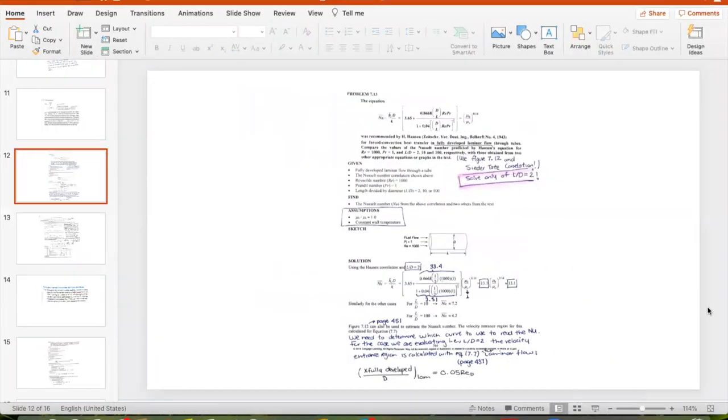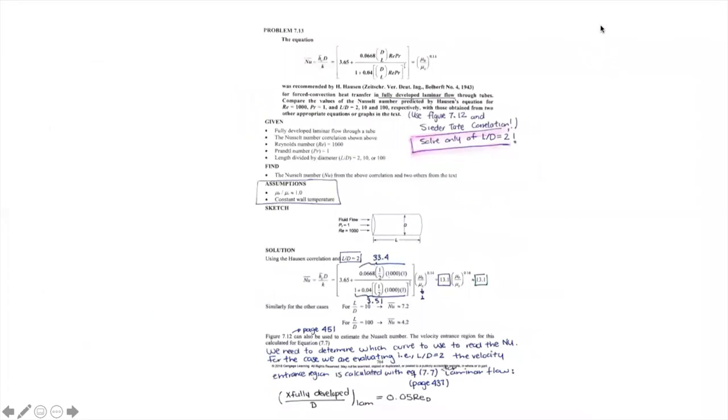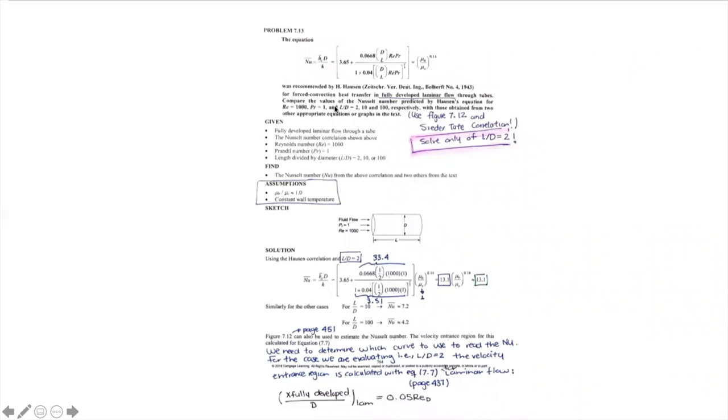Next, let's go through problem 7.13 from your textbook. This problem gives the Hausen equation for the Nusselt number, recommended for forced convection heat transfer in fully developed laminar flow through tubes. The problem asks you to compare Nusselt values from the Hausen equation for Re = 1,000, Pr = 1, and L/D ratios of 2, 10, and 100 with two other appropriate equations or graphs. The main idea is to see how different Nusselt correlations compare. I'll show the solution for L/D = 2 only.